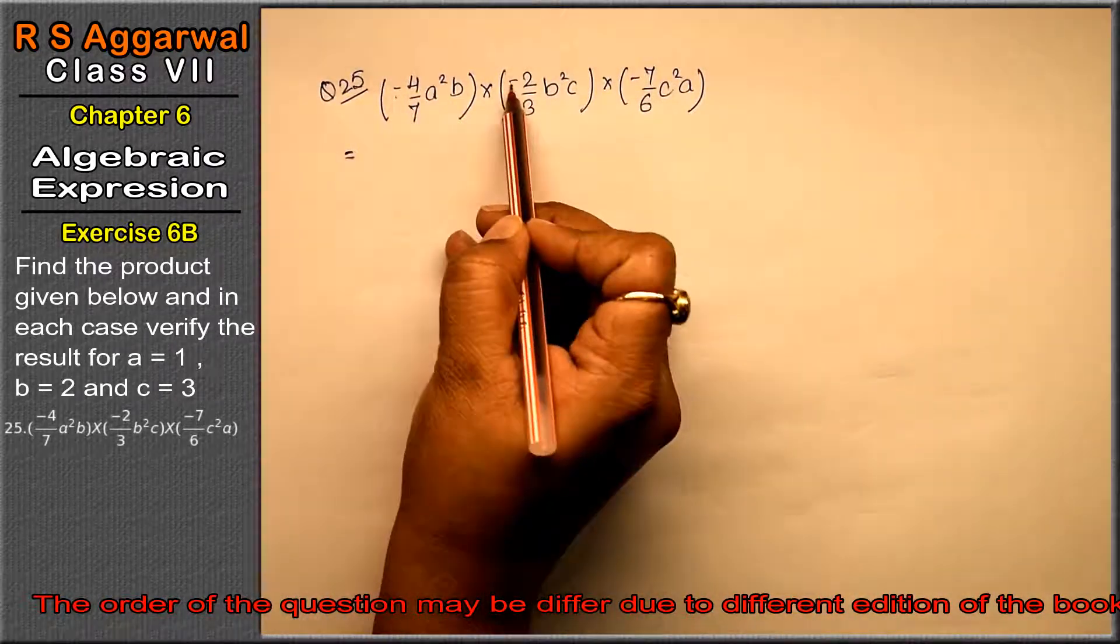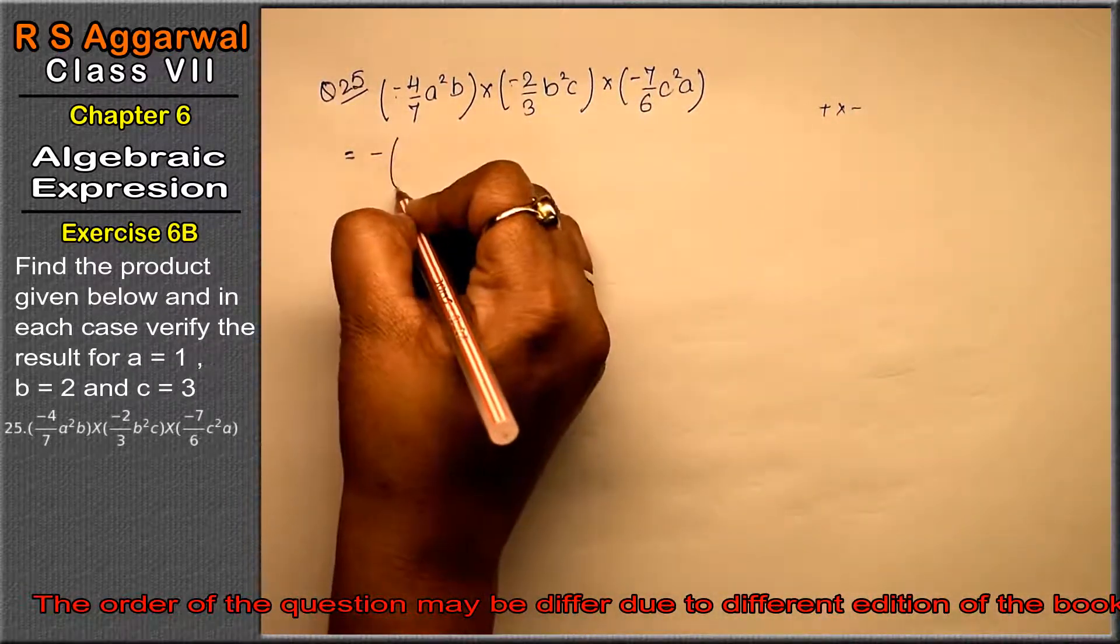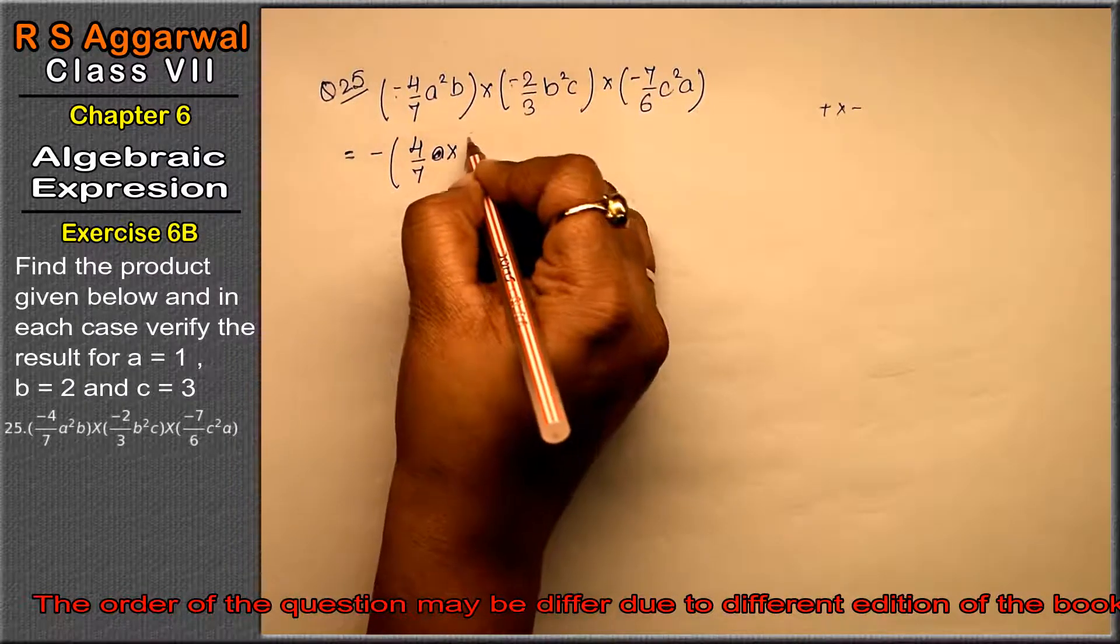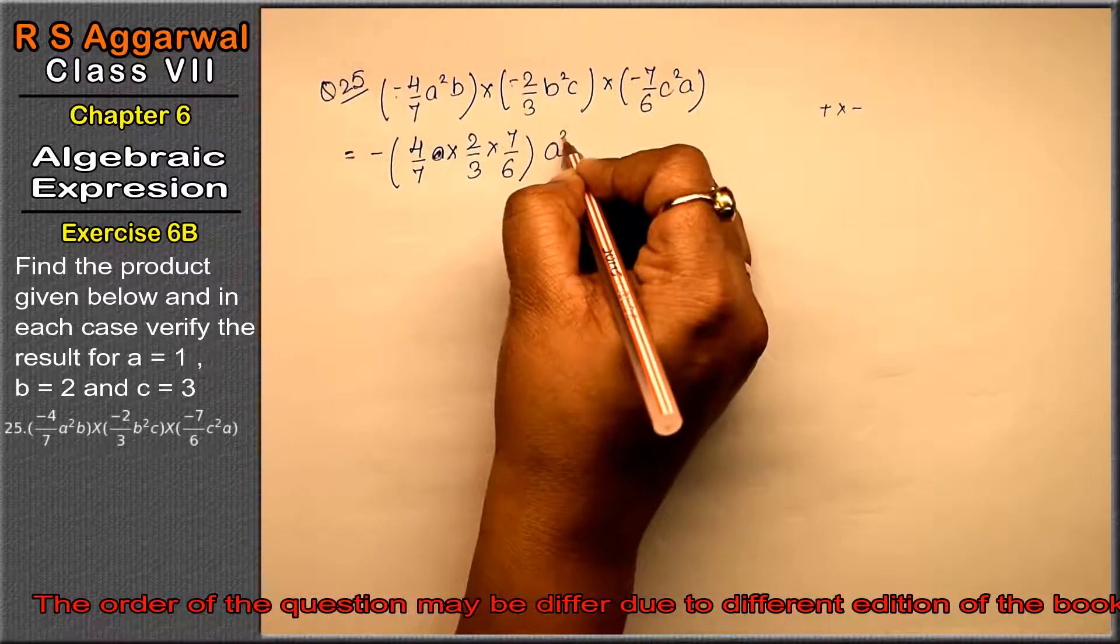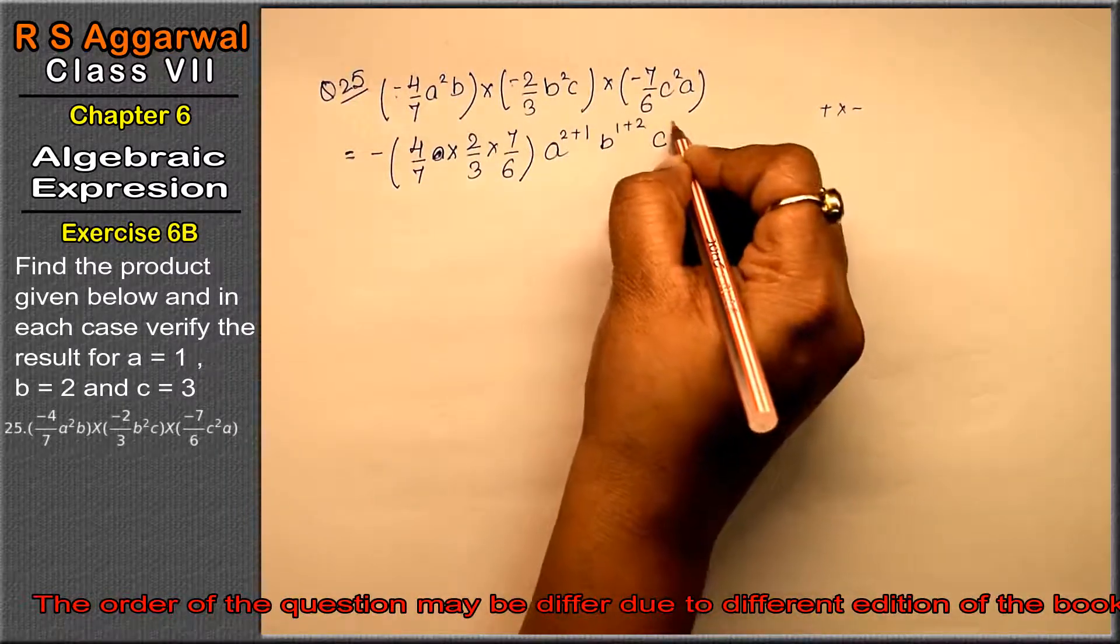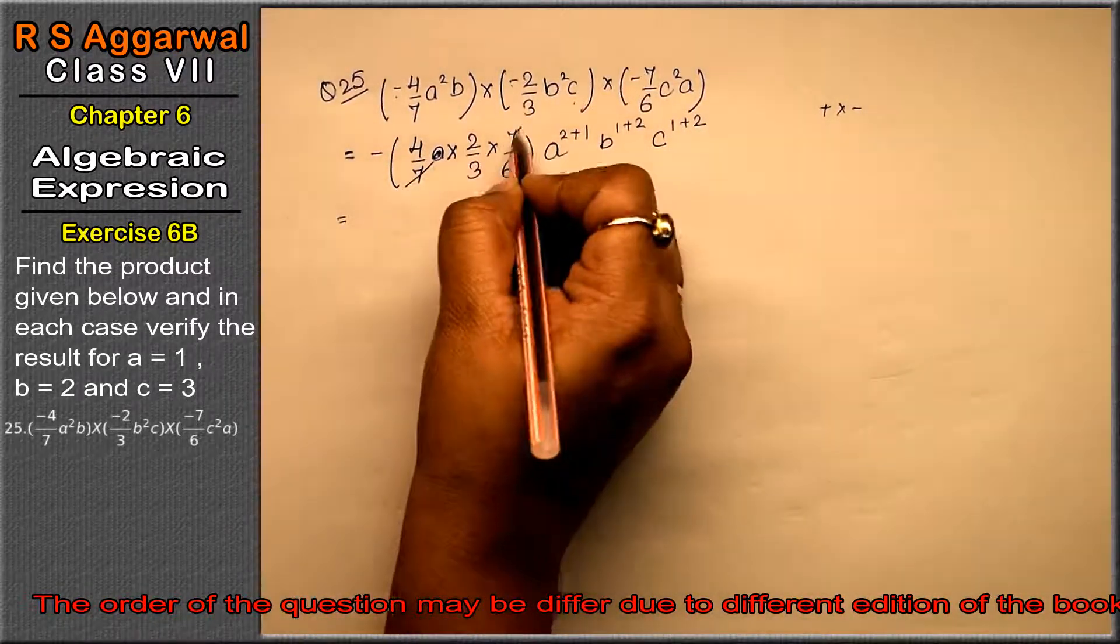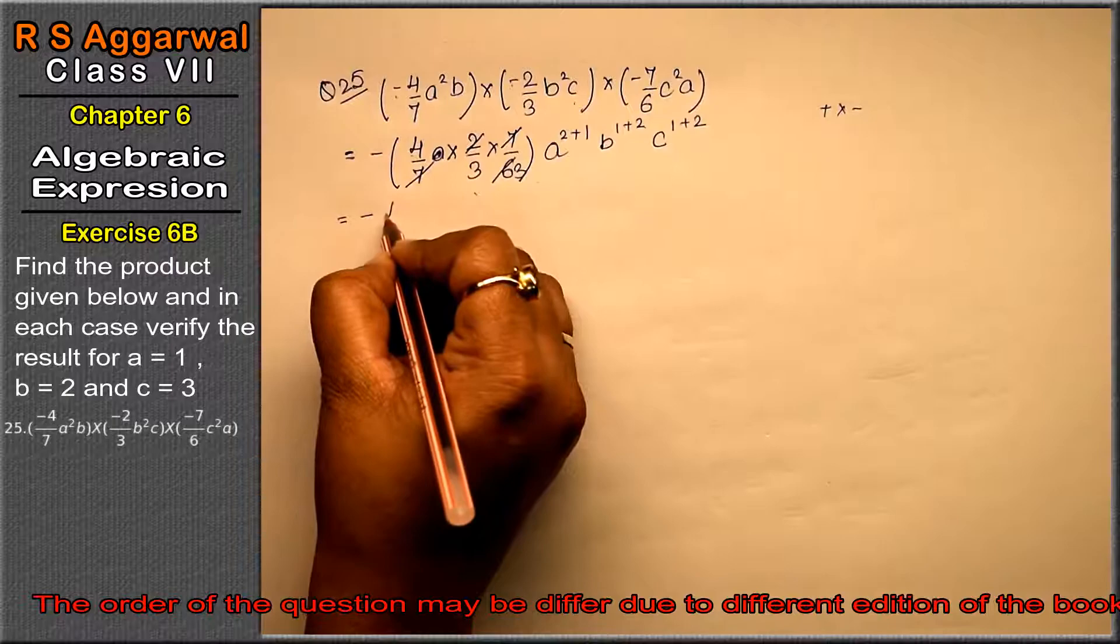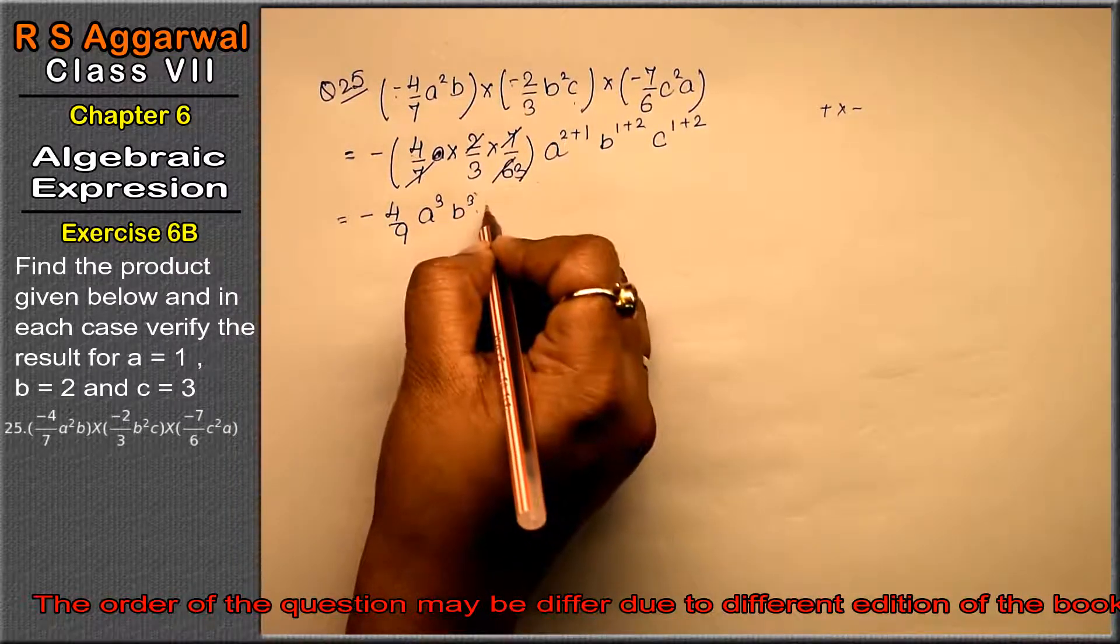See, minus minus plus, plus into minus is minus. 4 upon 7 into 2 upon 3 into 7 upon 6, a to the power 2 plus 1, b to the power 1 plus 2, c to the power 1 plus 2. Now see, 7 and 7 cancel, 2 into 2 is 4, 2 and 3 is 6. So, minus 4 upon 9, a to the power 3, b to the power 3, and c to the power 3. So this result is right hand side, and this is our left hand side.